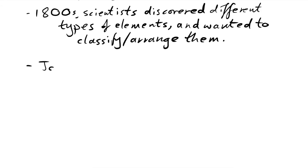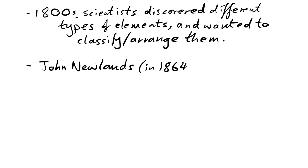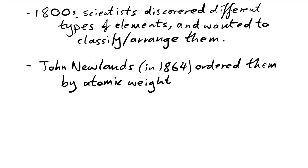It was John Newlands who started to get the ball rolling. It was around 1864 that he started to bring his idea together of how he could arrange these elements. And he ordered them by atomic weight — now we might say atomic mass, but they said atomic weight back in the day. So he just put them all in a long line.